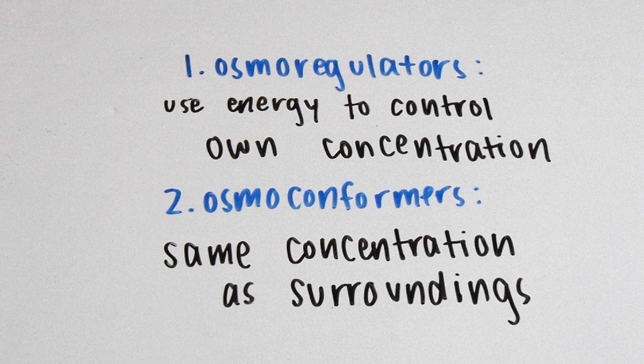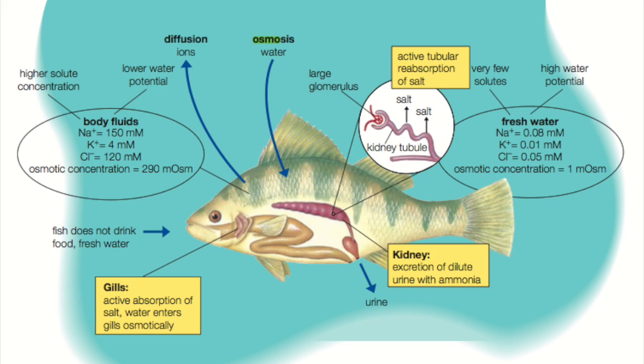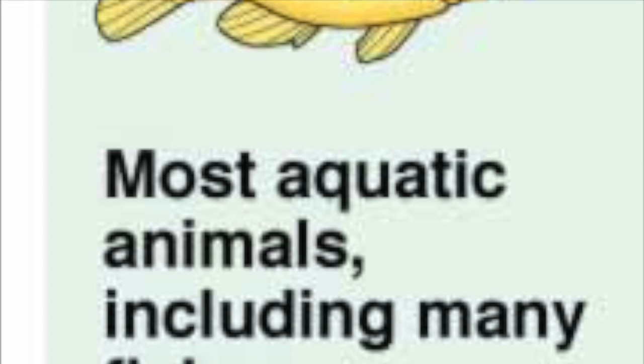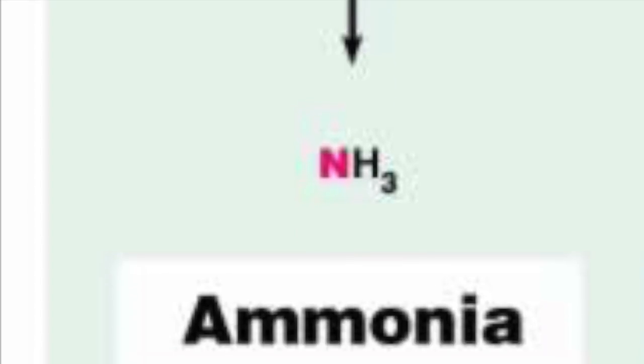When we examine the nitrogenous wastes of an organism, it can help us predict the habitat it's living in. This freshwater fish can excrete ammonia, the most toxic form of nitrogenous waste. That's because it's surrounded in freshwater and there's not much salt in its environment. Therefore, ammonia is the best option because it has plenty of water to excrete along with it.